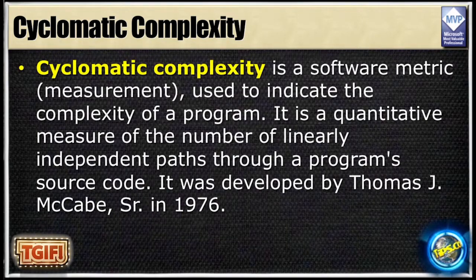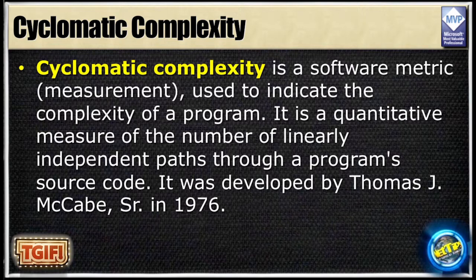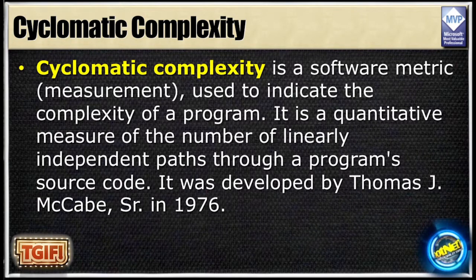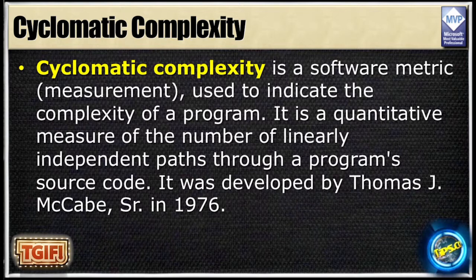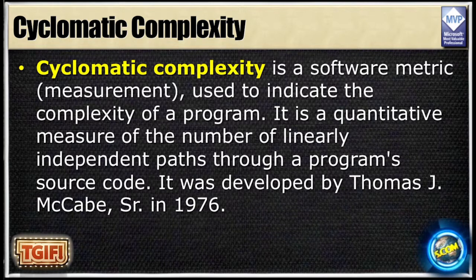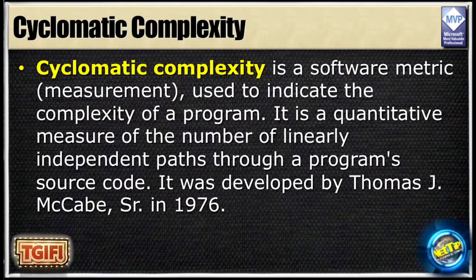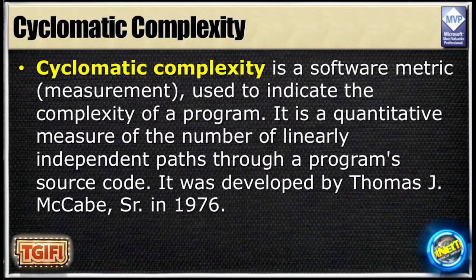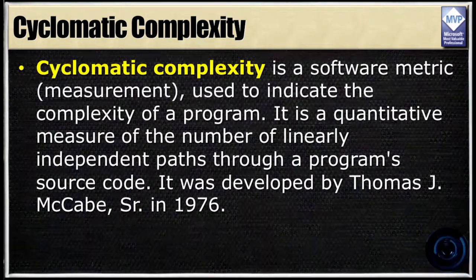The other question I like to ask: who knows what cyclomatic complexity means? It's the number of paths your code — your method — can take. And method includes properties, functions, whatever. That number you saw, which was 900-something on one method, means that's the minimum number of unit tests you must write, because for every path your code can take you need a unit test. You need to get that number down — it represents both complexity and how many unit tests you need to write. Refactor, refactor, refactor. And unfortunately, most managers won't give you time to do it, but if you do it in the beginning, it's really fast and easy.